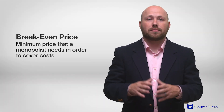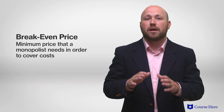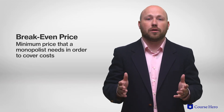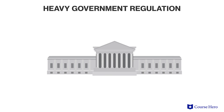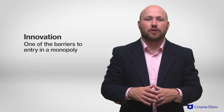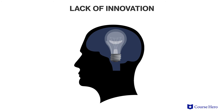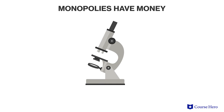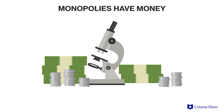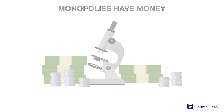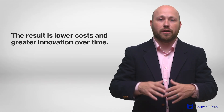The monopolist's breakeven price — the minimum price needed to cover costs — is lower than a new supplier could achieve, and as a result the market price is lower as well. These markets are heavily regulated by the government to ensure the cost savings are passed on to consumers. Innovation is one of the barriers to entry in a monopoly, and while lack of innovation in the long run is a potential cost to society, monopolies can also be a long-run benefit. Research and development is expensive and can have economies of scale, and a monopoly making above-normal profits has a pool of money to spend on developing and supporting innovation, as well as an available market to implement cutting-edge research — resulting in lower costs and greater innovation over time.